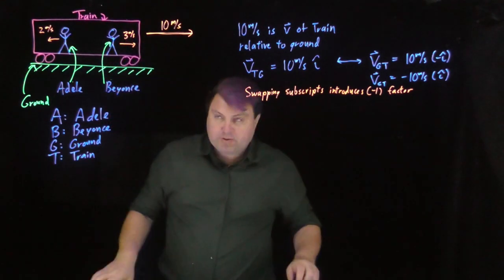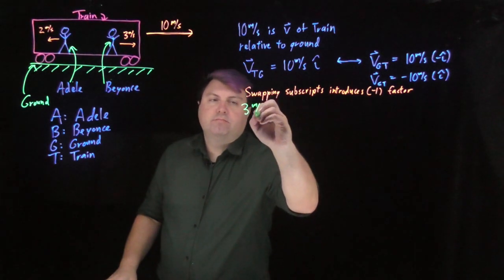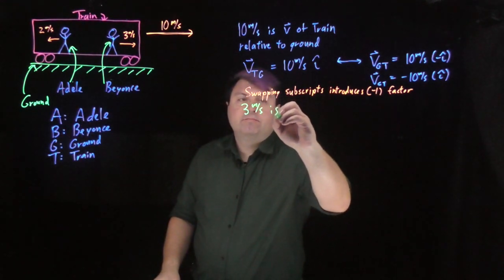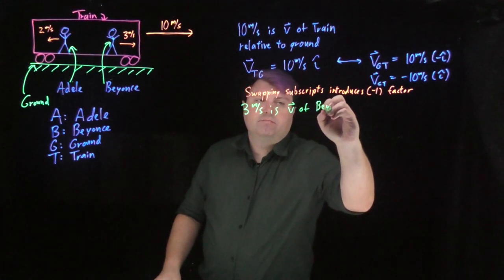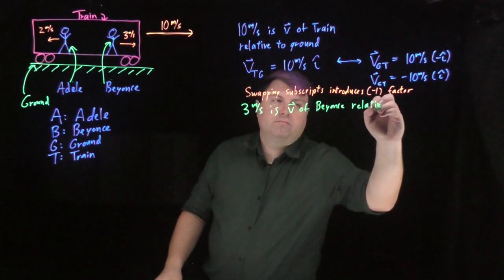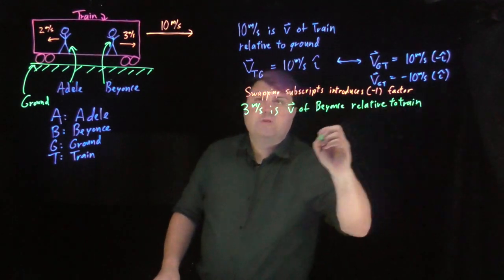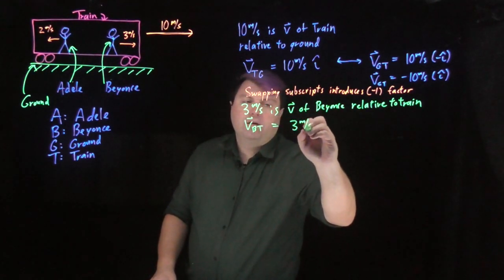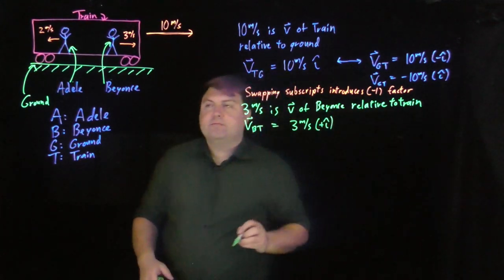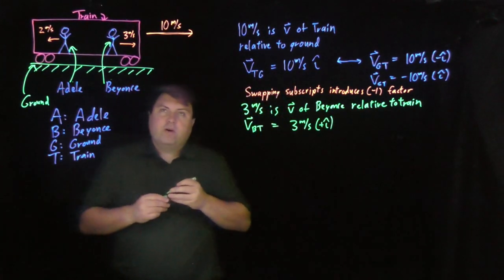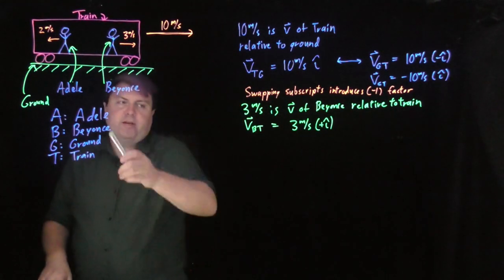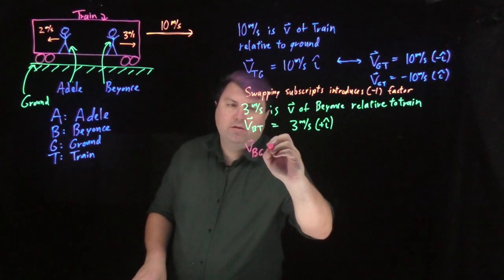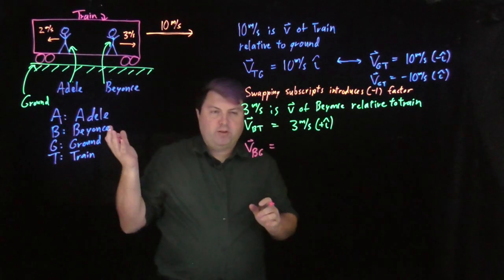When I say 3 meters per second, that's the velocity of Beyonce relative to the train. So the velocity of Beyonce relative to the train is 3 meters per second in positive i-hat. We might intuit that Beyonce relative to the ground should be 13 meters per second.